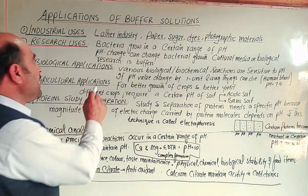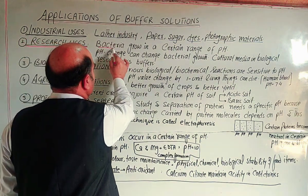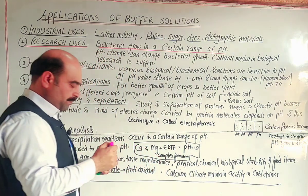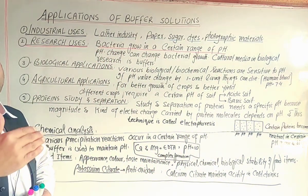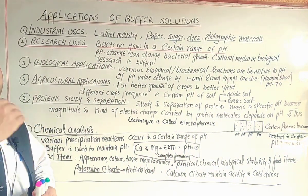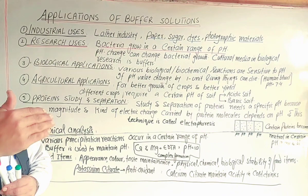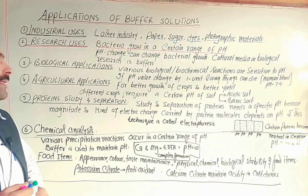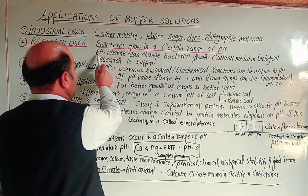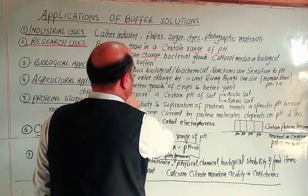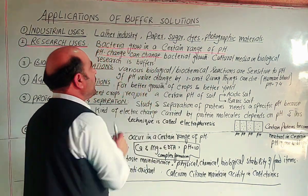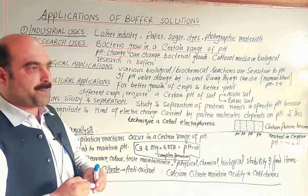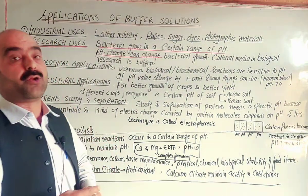A research detail: bacteria grow in a certain range of pH. Bacterial growth occurs within a specific pH range. When the pH exceeds or falls below that range, the bacteria will be affected. A change in pH can change bacterial growth.